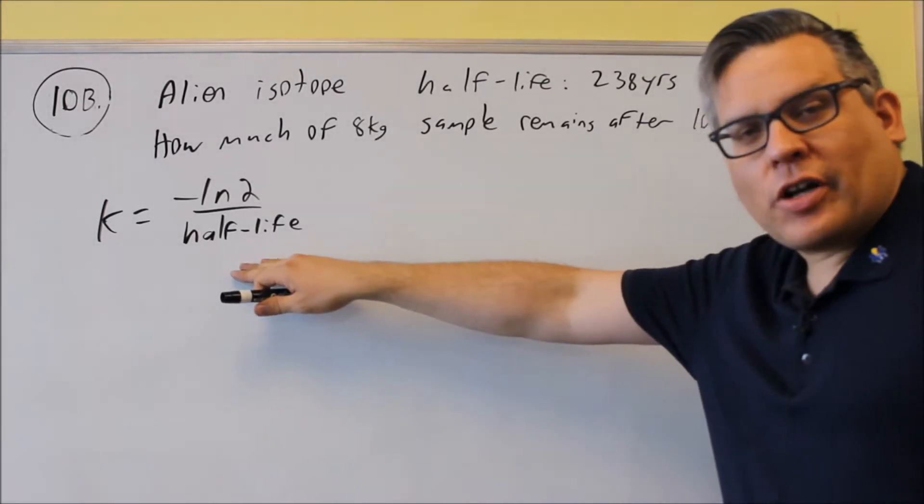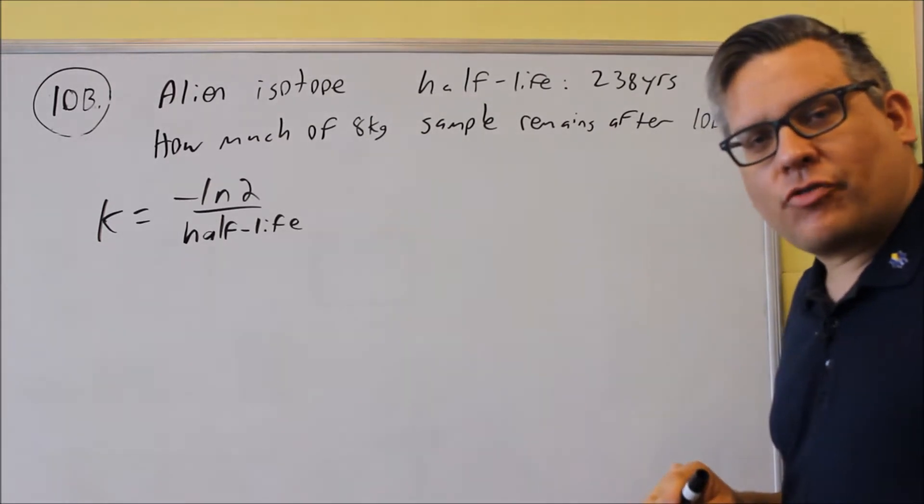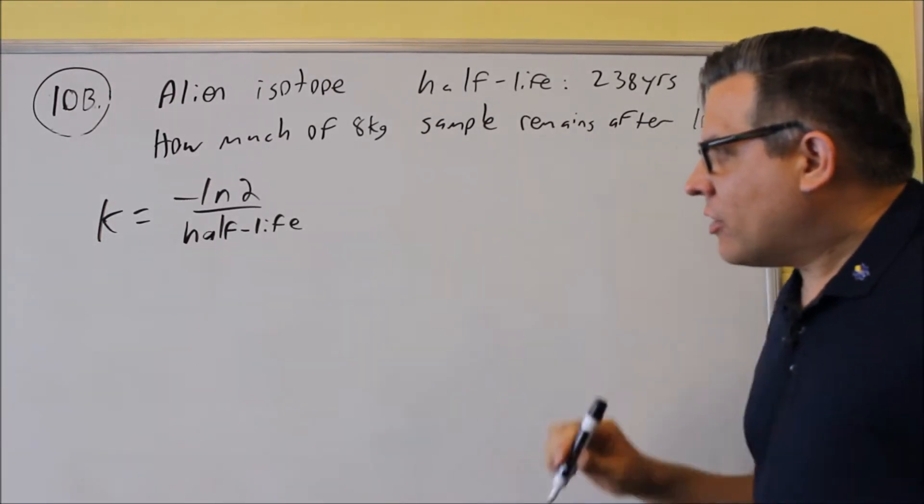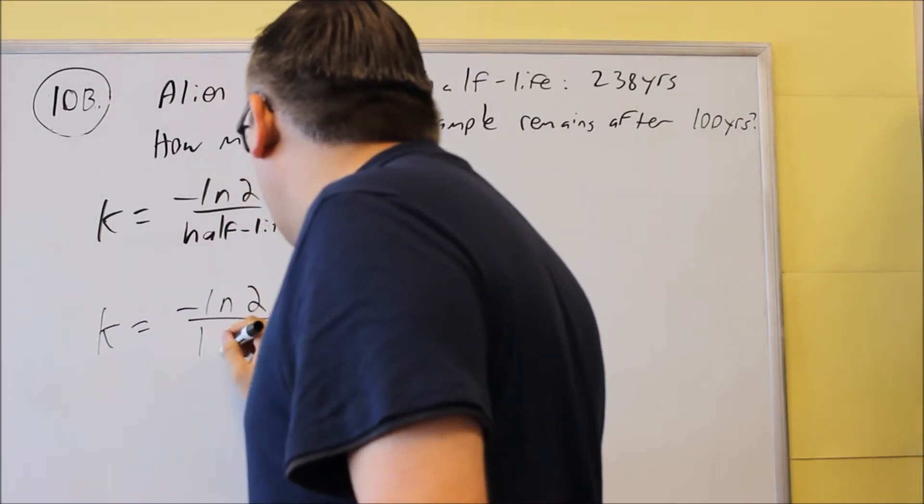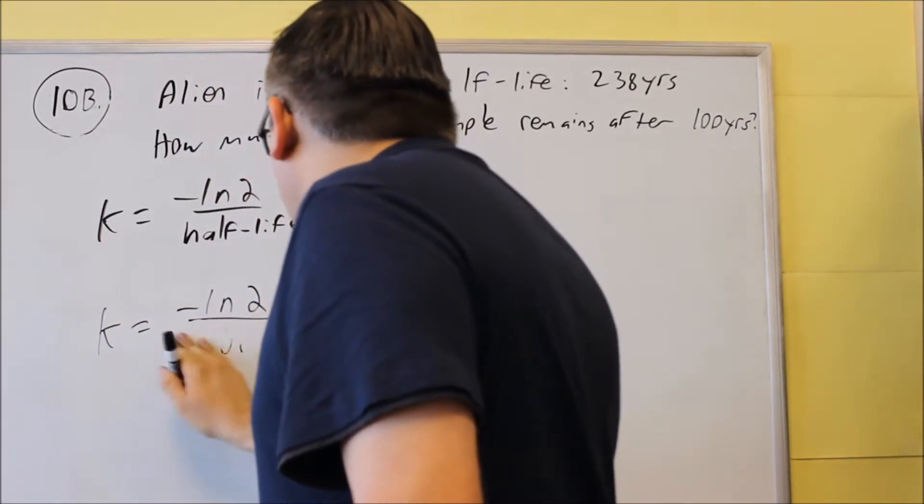As in the first problem, for part A, we've got to use the same formula to calculate our k value: negative ln(2) over half-life. So we're going to do negative natural log of 2 over 238 years.